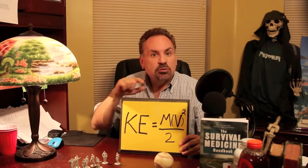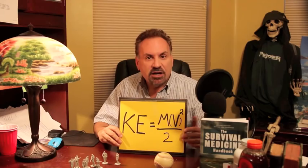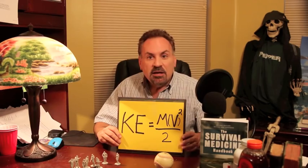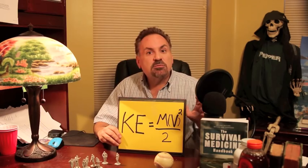High velocity projectile damage as caused by a bullet is, as you can imagine, much greater than low velocity damage caused by, say, a knife. This damage depends on the amount of energy the projectile possesses due to its motion. In physics, this is referred to as kinetic energy, and it follows the formula: kinetic energy equals the mass of the projectile times its velocity squared, divided by two — or KE = mv²/2. Because velocity is squared, you can see that the speed of a projectile is more important in causing damage than its weight or mass.